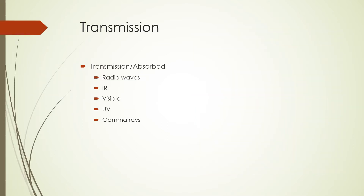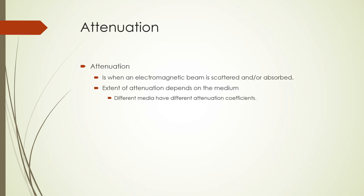Electromagnetic waves can be transmitted through a medium or they can be attenuated. On a clear day, visible light is transmitted easily through the atmosphere. On a cloudy day, the light is partly attenuated as it travels through the clouds. This process happens at different levels for other electromagnetic waves like infrared radiation, ultraviolet, radio waves, and gamma rays. Attenuation is when an electromagnetic beam is scattered and/or absorbed. The extent of attenuation depends on the attenuating properties of the medium, and different media have different attenuation coefficients.